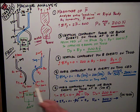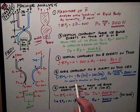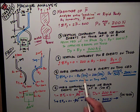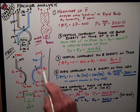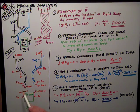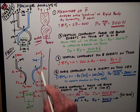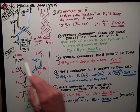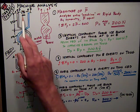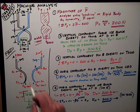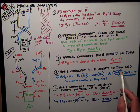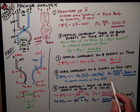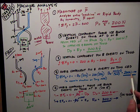So negative Bx, because it's clockwise, times 296, shortest perpendicular distance, plus, because it's trying to rotate counterclockwise, this 200 newton force, about point D, and its dimension is also that 296, so rearranging that equation and solving it, the 296s cancel, and I get that Bx is equal to 200 newtons.